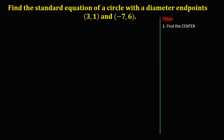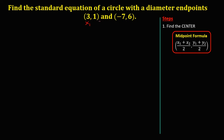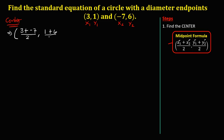First, we need to find the center of the circle using the midpoint formula. From the given diameter endpoints, (3, 1) is x₁ and y₁, and (-7, 6) is x₂ and y₂. So the midpoint gives us x₁ plus x₂: that's 3 plus negative 7, over 2. And y₁ plus y₂: that's 1 plus 6, over 2.